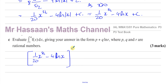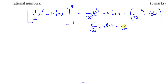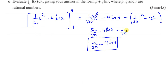Now putting in the limits of 4 and 1: at x equals 4, the square root of 4 is 2, and 2 to the power of 5 is 32, so we get 32 over 20 minus 4 ln 4. At x equals 1, 1 to any power is 1, giving 1 over 20, and ln 1 is 0. So we have 32 over 20 minus 1 over 20 minus 4 ln 4, which equals 31 over 20 minus 4 ln 4. That's the answer to part c.